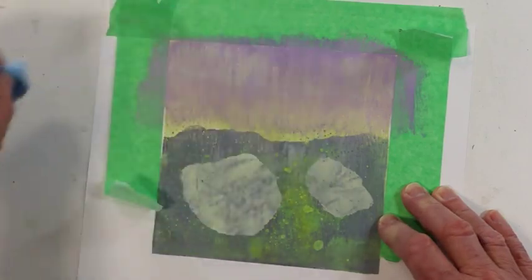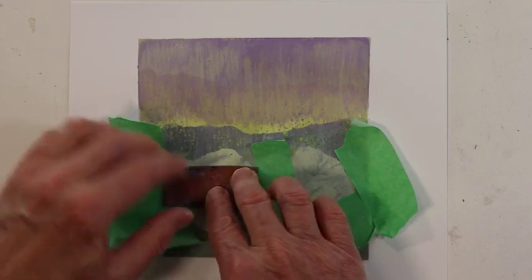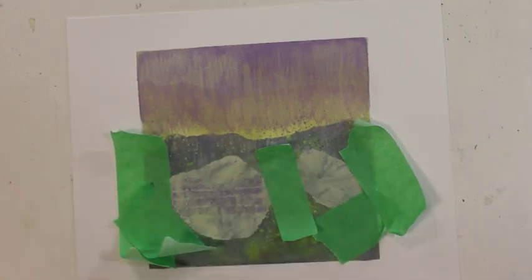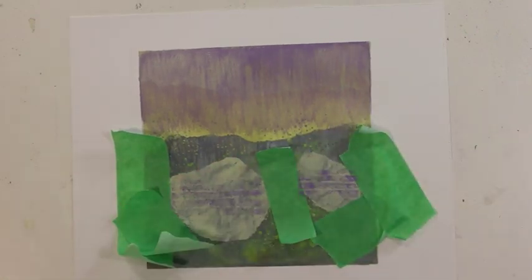Then I had a stamp I wanted to add to the rocks, so I taped off the edges of the rocks to prevent overrun of the color, and stamped the horizontal lines, just for some visual texture again.